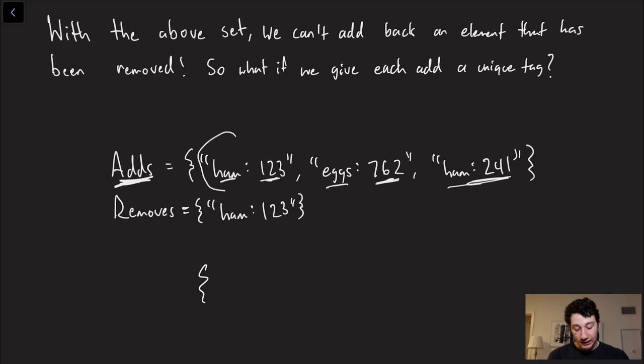On the other hand, let's now say that at the time, the set only had these elements right here that someone went ahead and said, I want to remove ham 1,2,3. And so now ham 1,2,3 goes in the removes list. But at the same time, if another leader basically went ahead and said, okay, well, I'm adding ham 2,4,1,